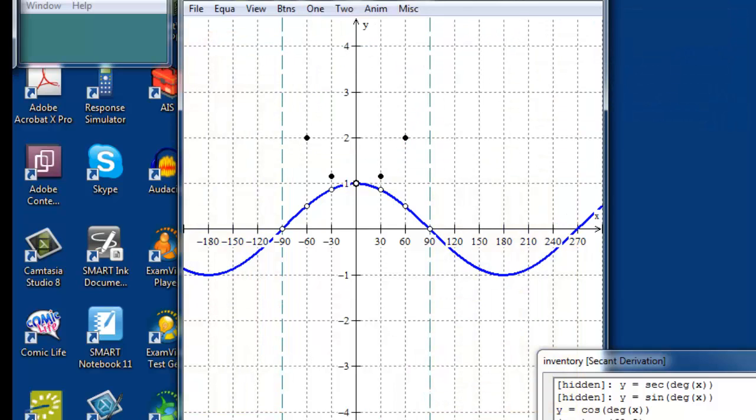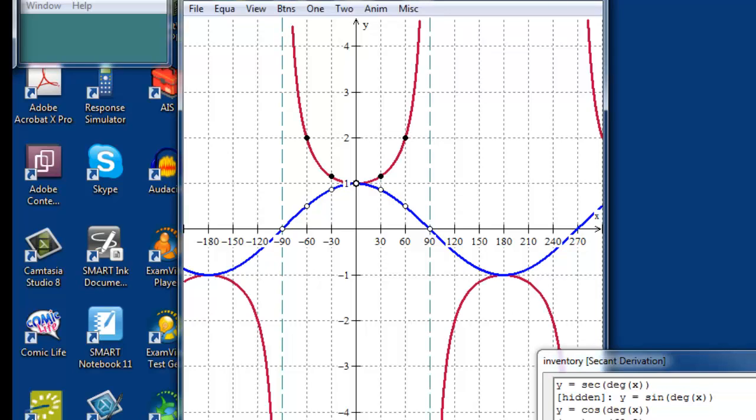I'm going to clear all our scribbles here and look at the graph of the secant of X. And we can see how it relates to the graph of the cosine of X. The secant of X, if we let it stand alone, is simply a set of alternating up and down U shapes.